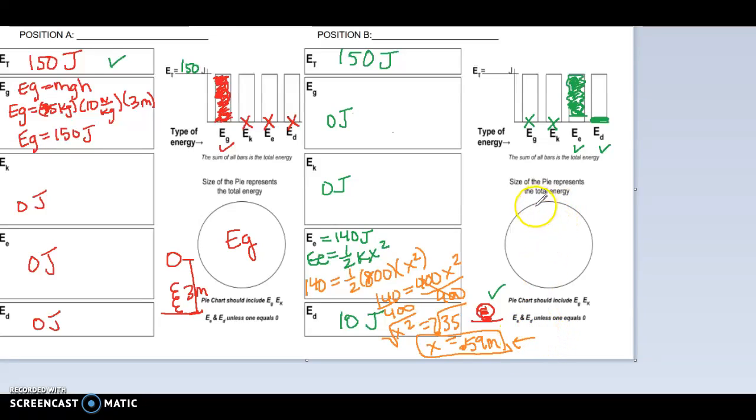So my pie then is going to look like a little tiny sliver of ED. The rest of the pie is EE. So that is number two.